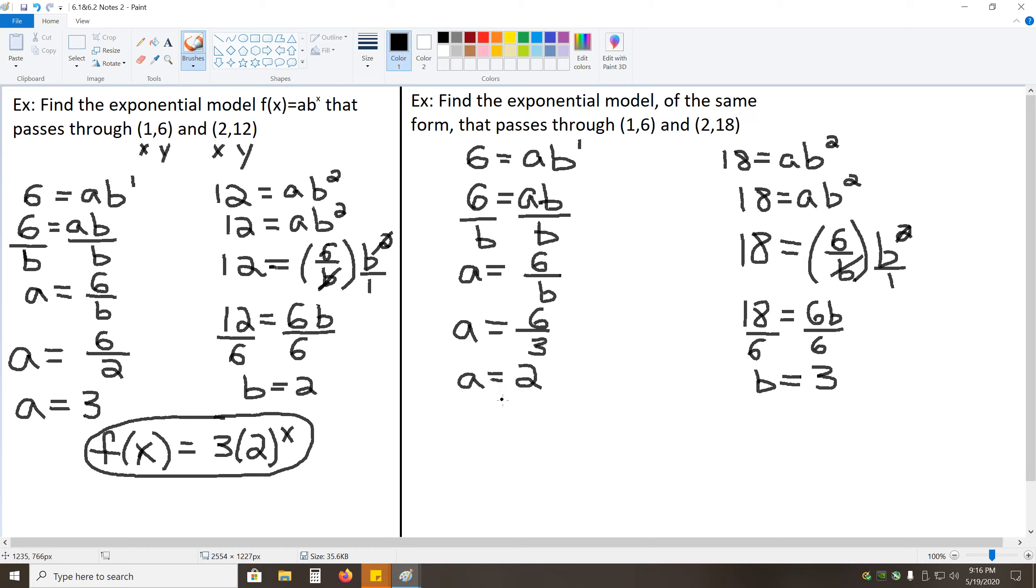So, our A and B values ended up being opposites of what they were in the previous problem. We have F of X equals A is now 2 times 3 to the X.